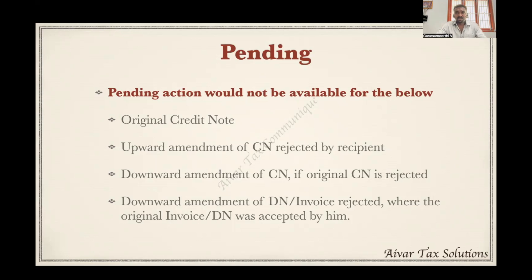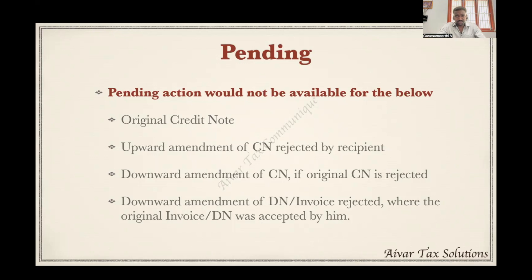In the current scenario for month-end invoices where goods are received next month, we take ITC and reverse it in column 4B(2) as a temporary reversal to reclaim in subsequent months. By using the pending facility, we can avoid that reversal and reclaim process — we simply keep the invoice as pending. That invoice will not be auto-populated in GSTR-3B but will remain in the IMS dashboard, so we can skip the step of reversal and reclaiming.